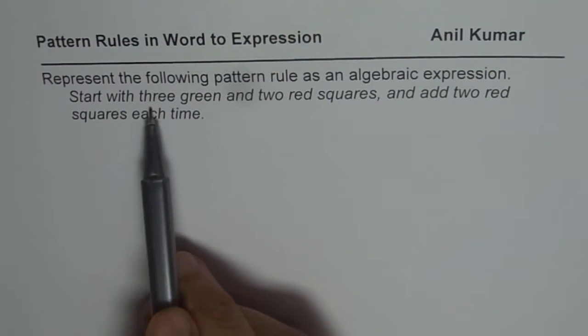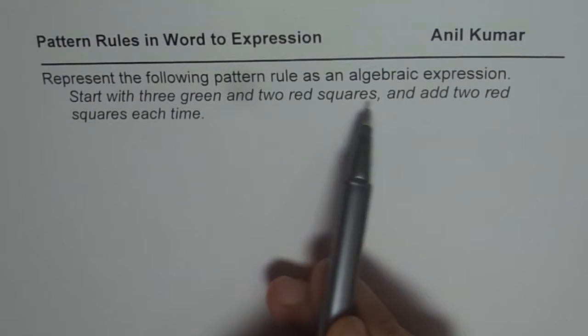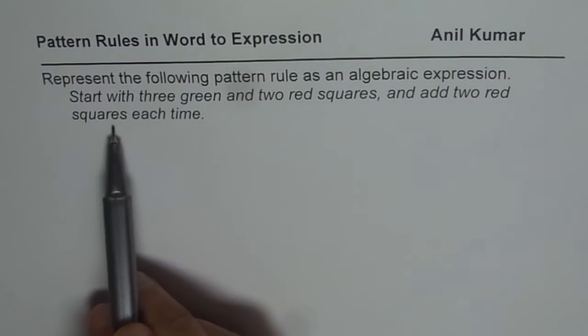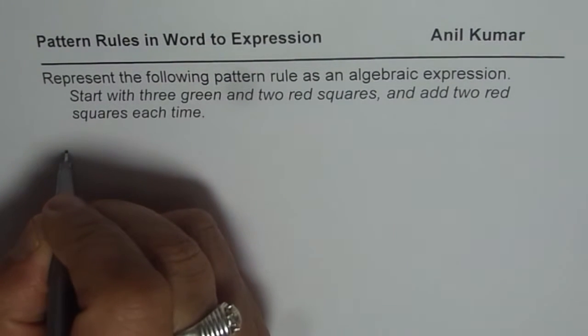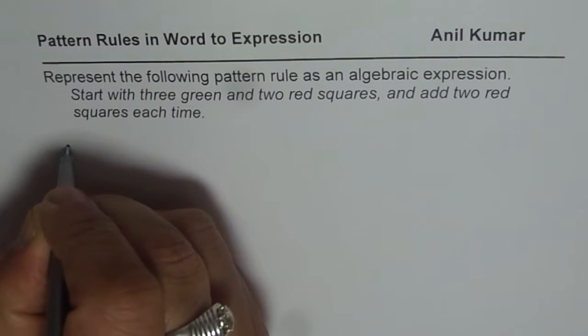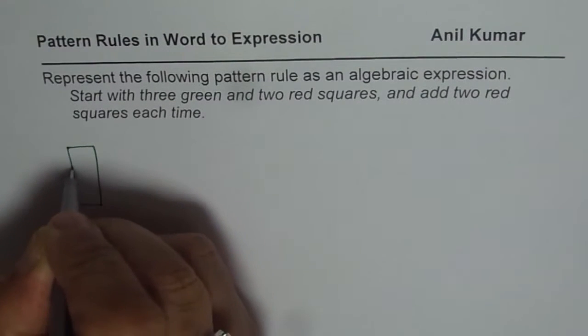Start with 3 green and 2 red squares, and add 2 red squares each time. So let's first sketch our patterns. We are starting with 3 green, so let us say these are 3 green squares.